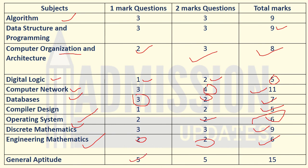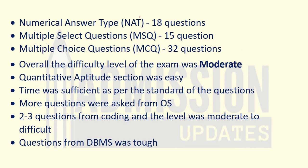For General Aptitude, five one-mark questions and five two-mark questions were asked, totaling fifteen marks. Additionally, there were 18 Numerical Answer Type (NAT) questions, 15 Multiple Select Questions (MSQ), and 32 Multiple Choice Questions (MCQ).